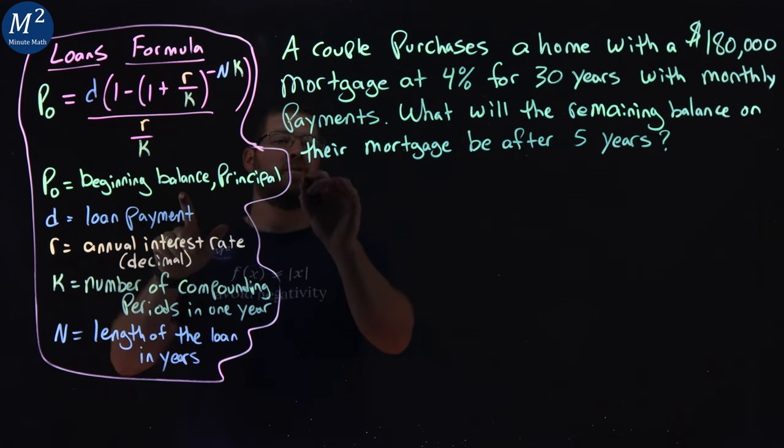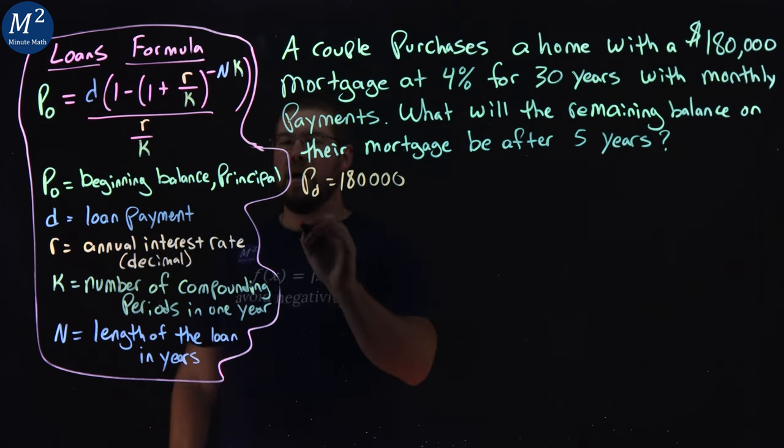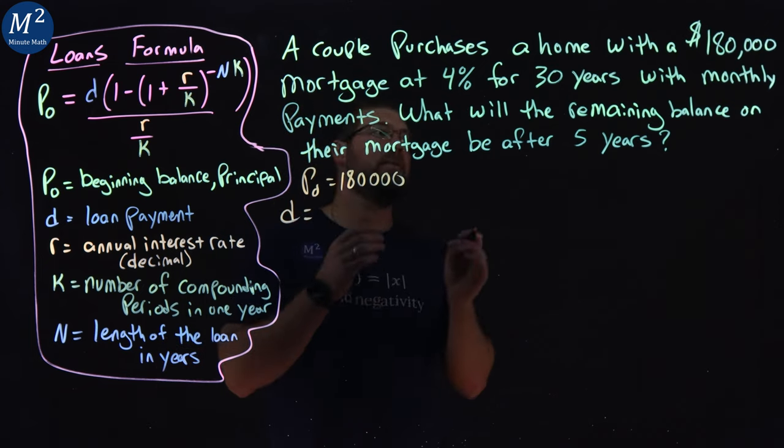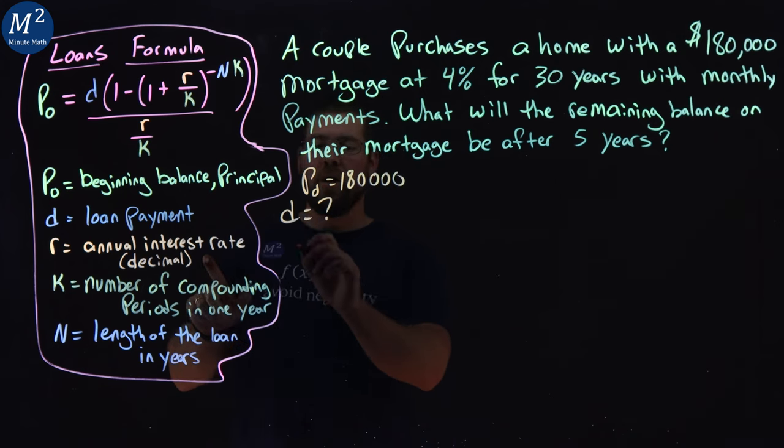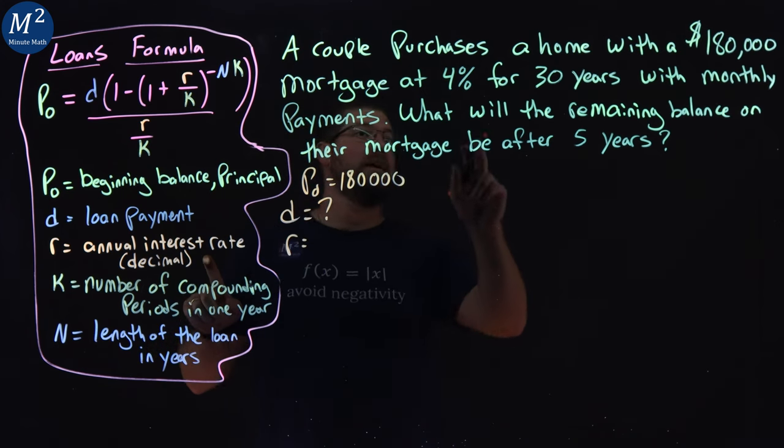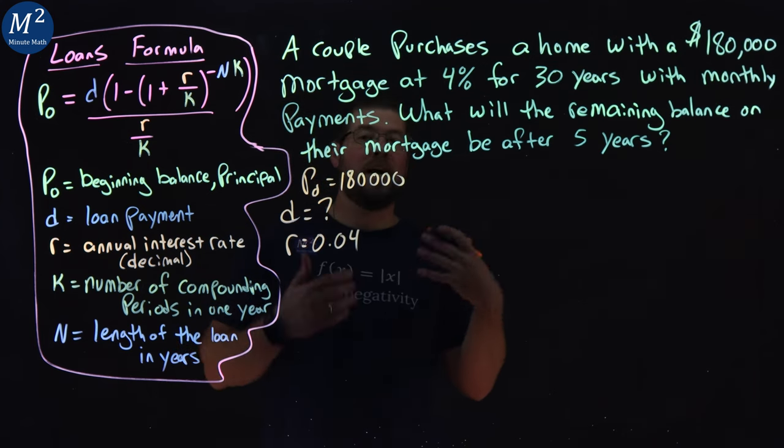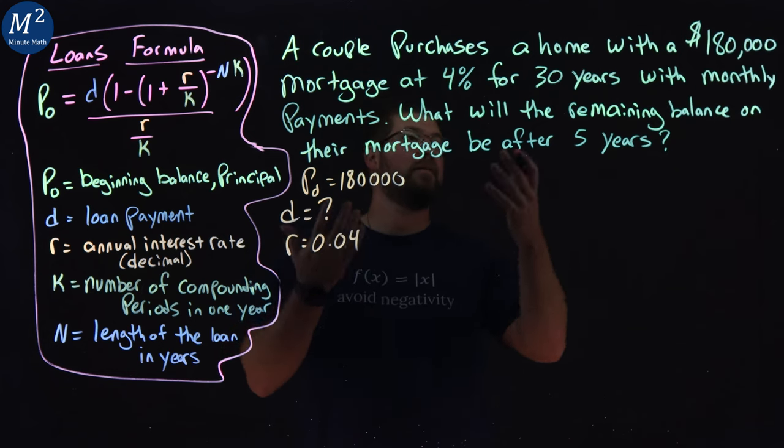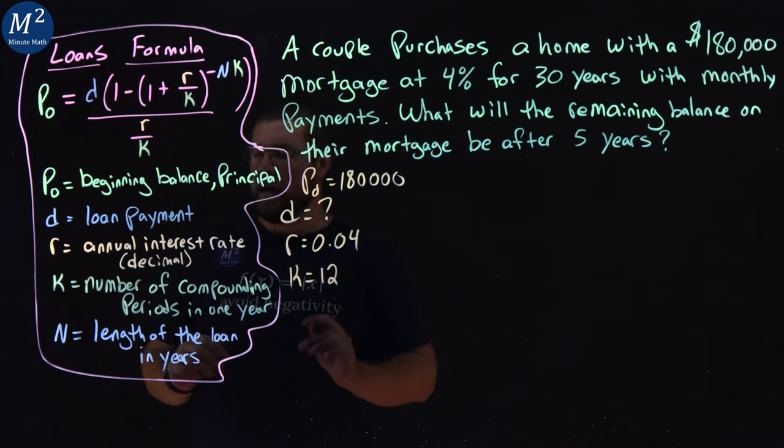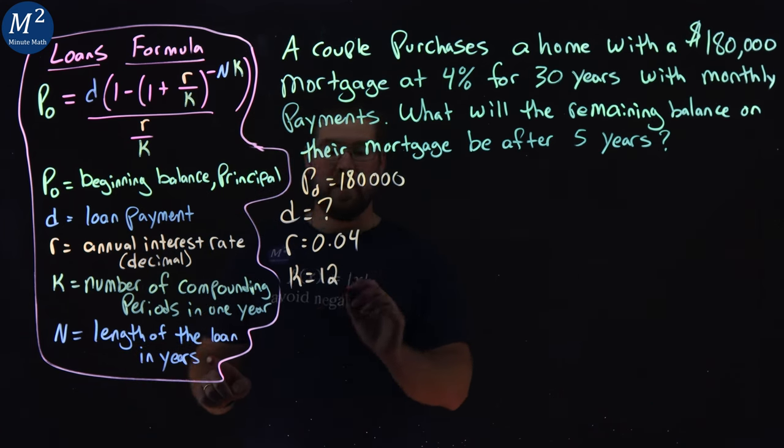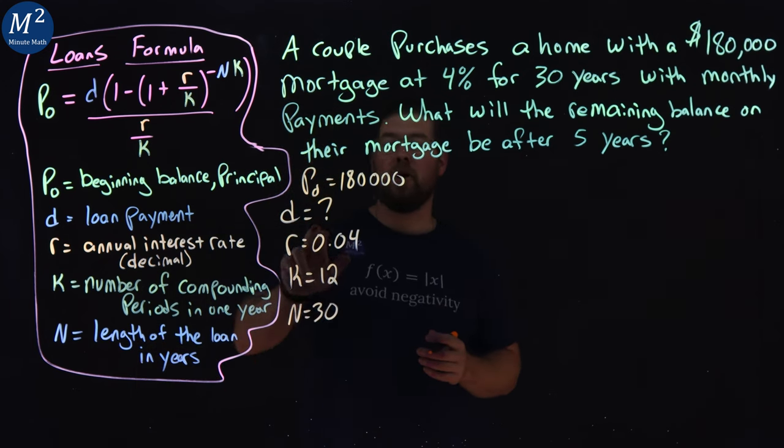Our P sub 0, the initial amount, is going to be $180,000. That's the mortgage. Our D, our monthly payment, we do not know. Our D value is what we're trying to find. Our R, the annual interest rate, they say it's 4%, so it has a decimal of 0.04. Then our K is the number of compounding periods in a year. It's monthly, right? We have monthly payments here, so it's going to be 12 months in a year. Then the length of the loan right now is going to be 30 years.